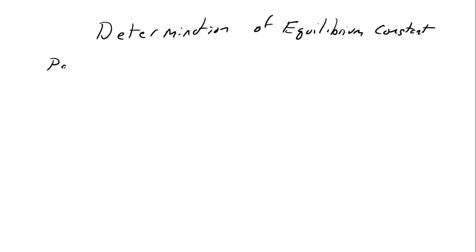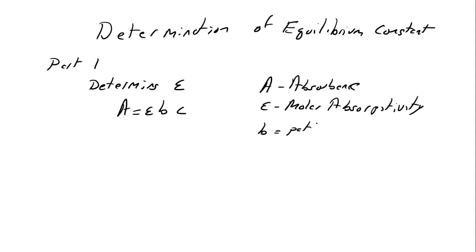So the first part, there's two parts. Part one is you are determining epsilon. Okay, so way back at the beginning of the semester we did Beer's Law: A is equal to epsilon B C. A is absorbance, epsilon is something called the molar absorptivity, it's a constant for a given situation. B is path length, which for this one is 1, and C is concentration in molarity.